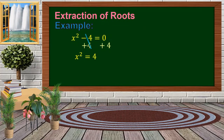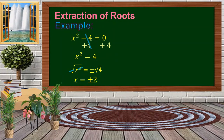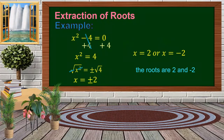After which, we apply the square root on both sides. The square root of x squared equals plus or minus the square root of 4. The square cancels, so x equals plus or minus 2. The roots are 2 and negative 2.